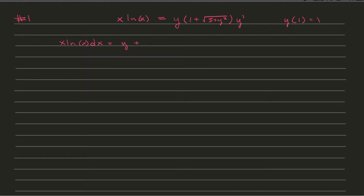Because this is a separable differential equation and each side is respectively where it needs to be, we can essentially just integrate both sides. On the left side, this integral is going to be an integration by parts. On the right-hand side, we have two pieces: the y part we can integrate regularly, and the second part will be a u-substitution.